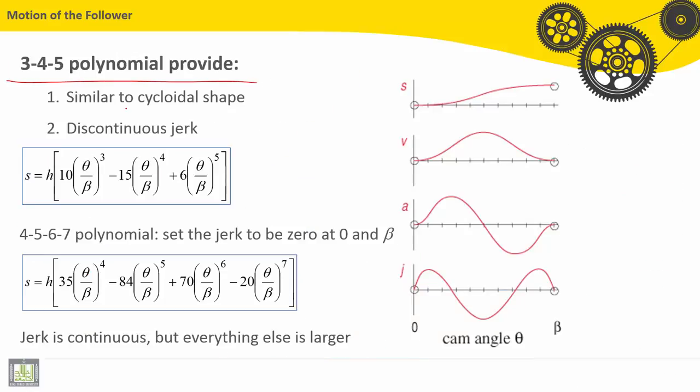3, 4, 5 polynomials provide similar to cycloidal shape and provide also discontinuous jerk.